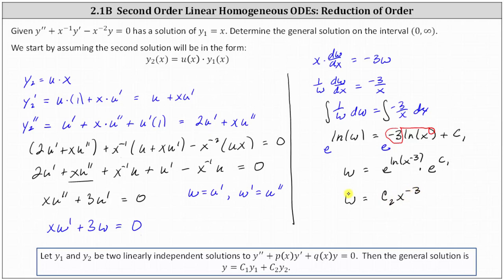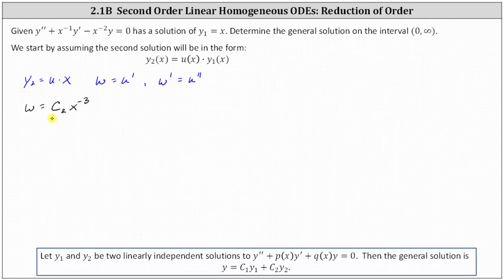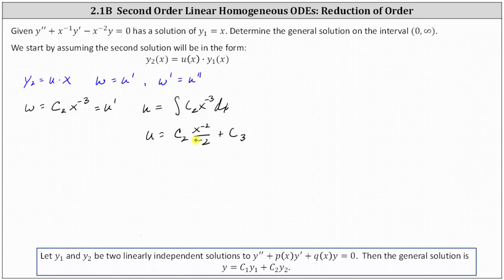Now that we have w, we can determine u because w equals u prime. If w equals c₂·x to the negative three, which equals u prime, we recover u by integrating c₂·x to the negative three with respect to x, giving u equals c₂·x to the negative two divided by negative two, plus a constant c₃. This is a family of functions; we can use any u to find the second solution y2. To simplify, let c₃ equal zero and c₂ equal negative two, giving a simplified u equals x to the negative two.